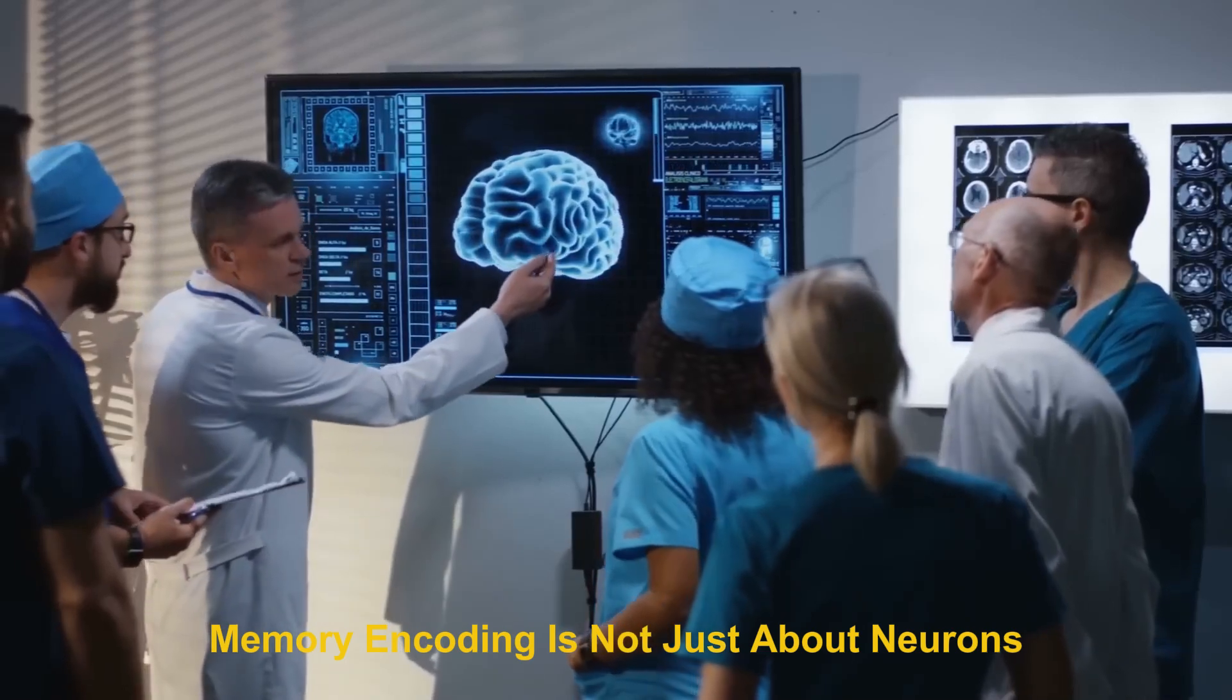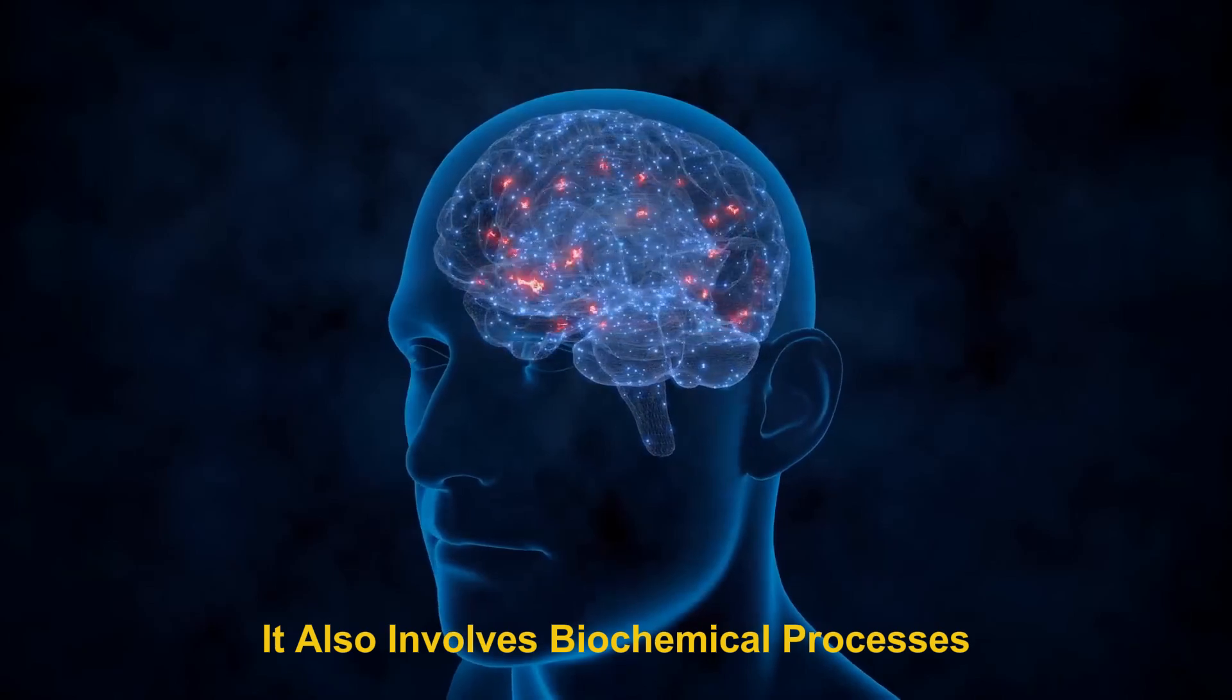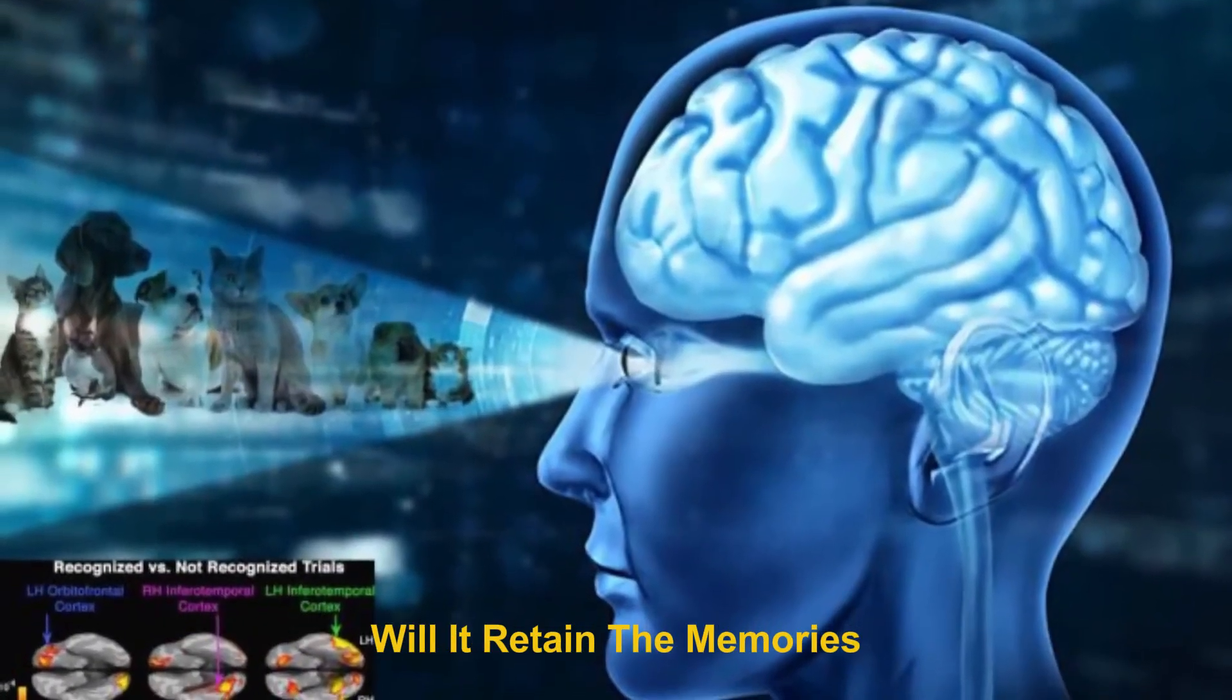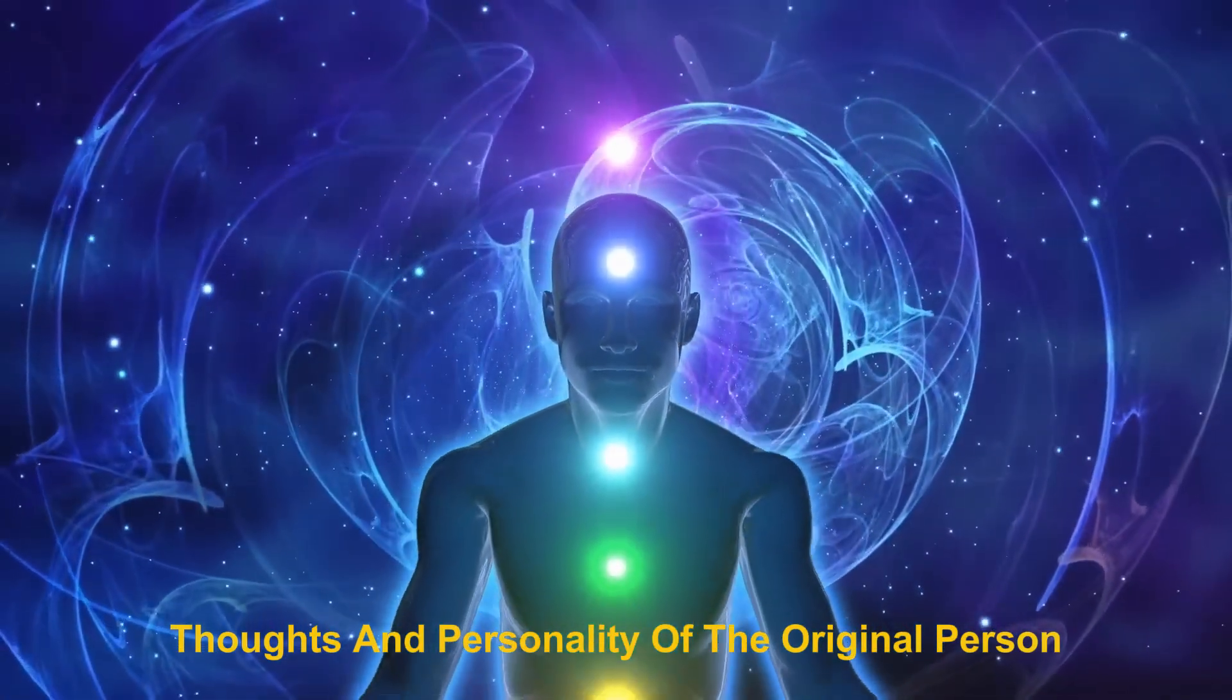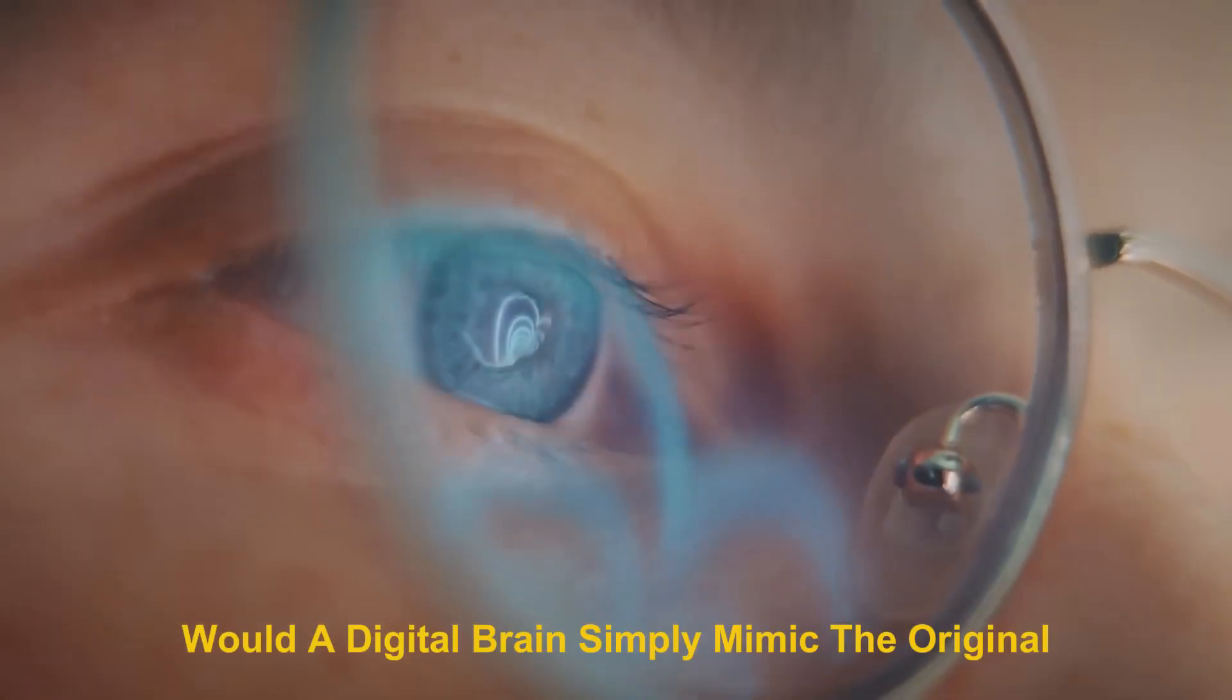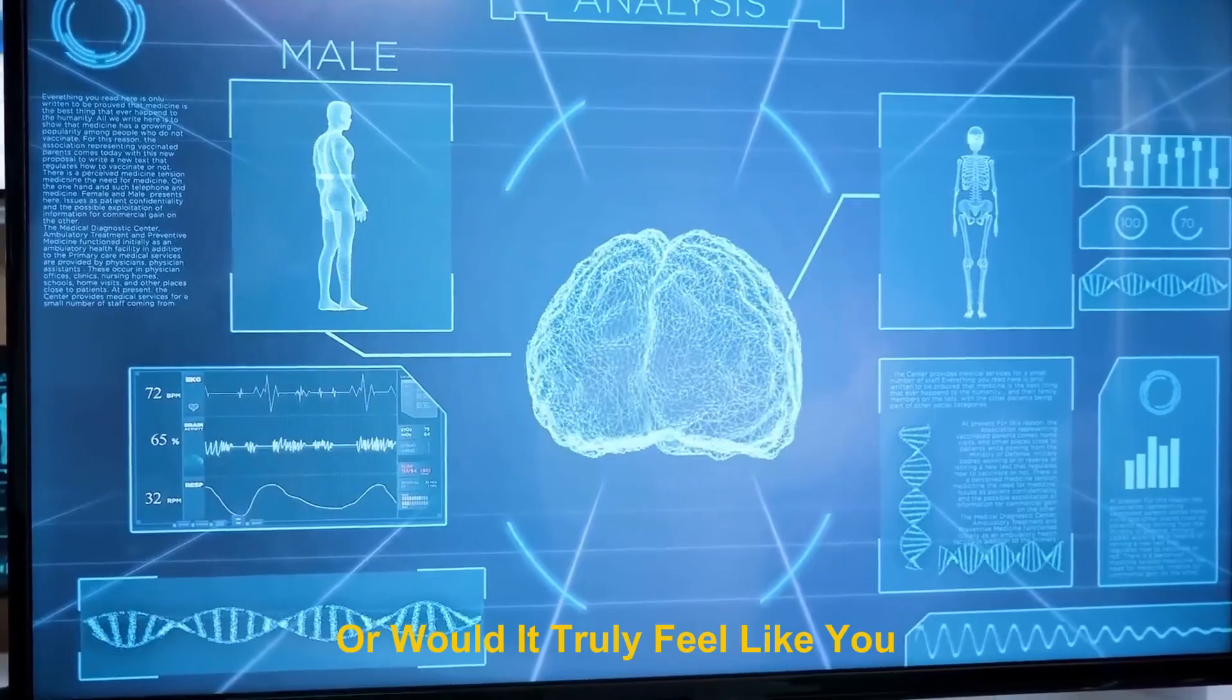Memory encoding is not just about neurons, it also involves biochemical processes. Even if we create a perfect digital copy of a brain, will it retain the memories, thoughts, and personality of the original person? This raises a critical question: Would a digital brain simply mimic the original, or would it truly feel like you?